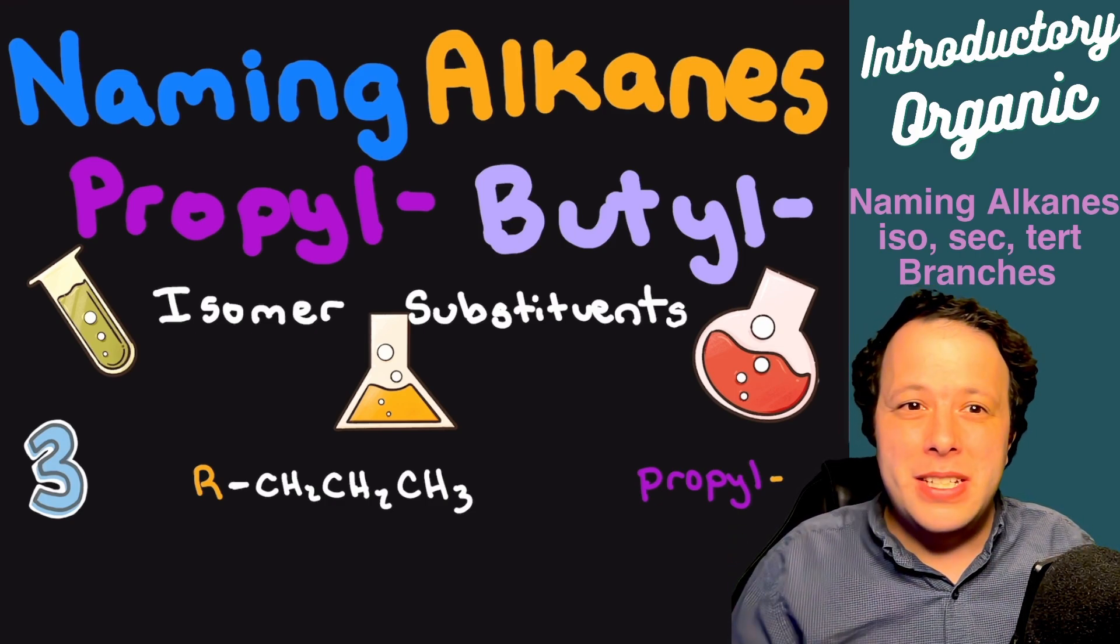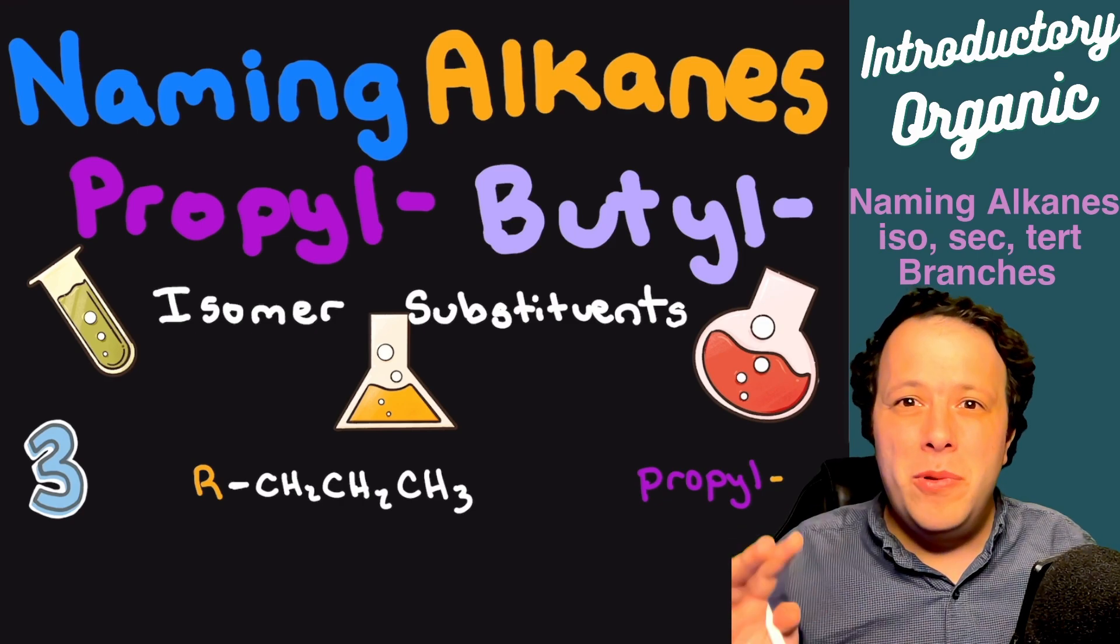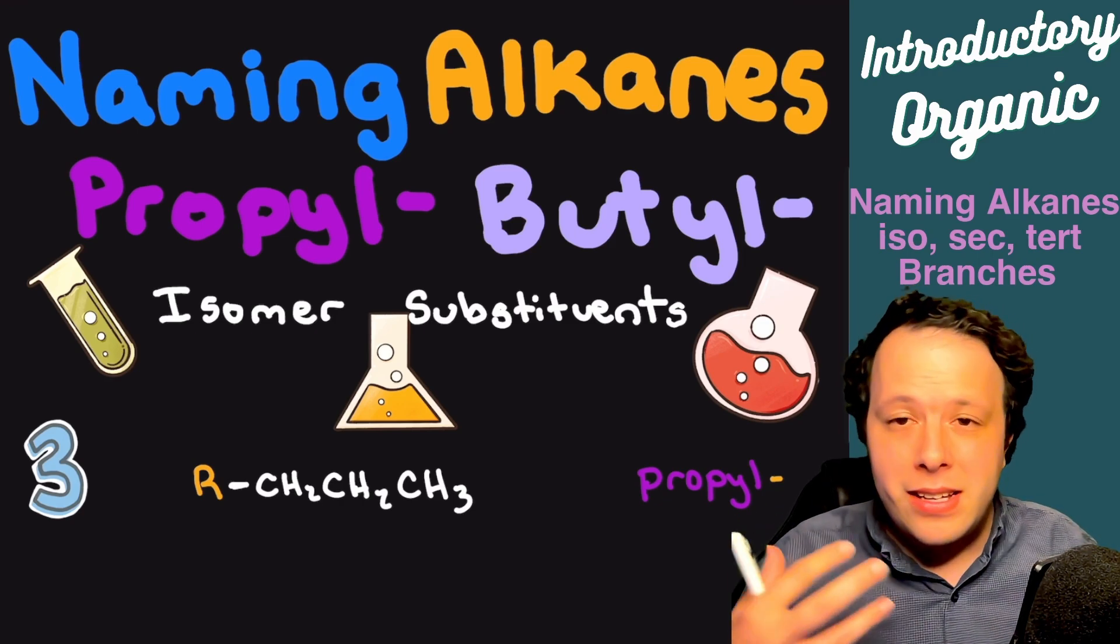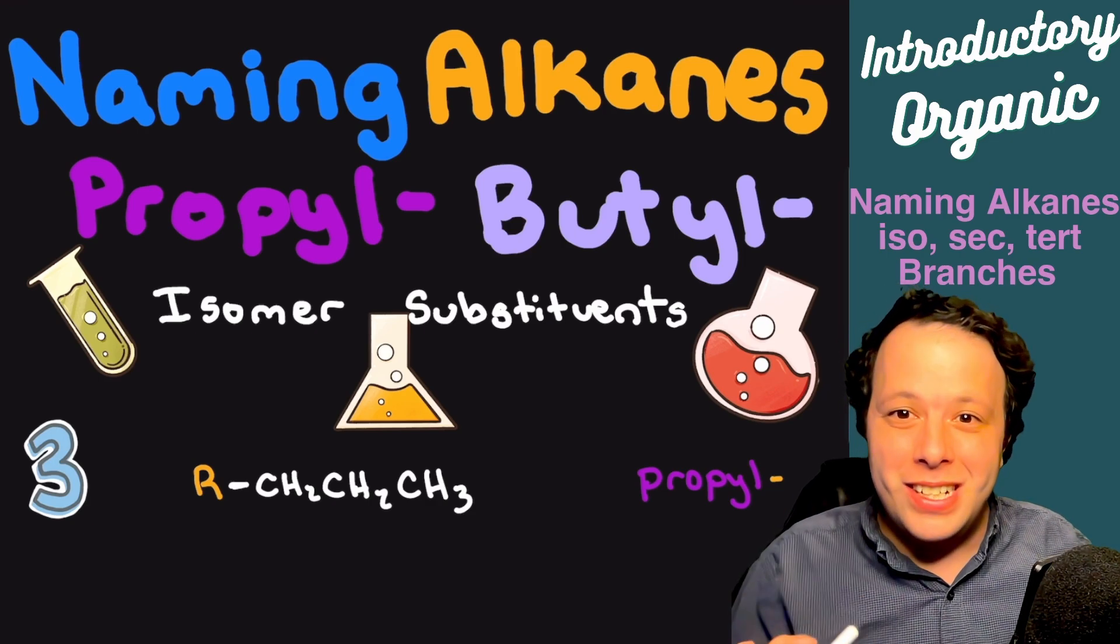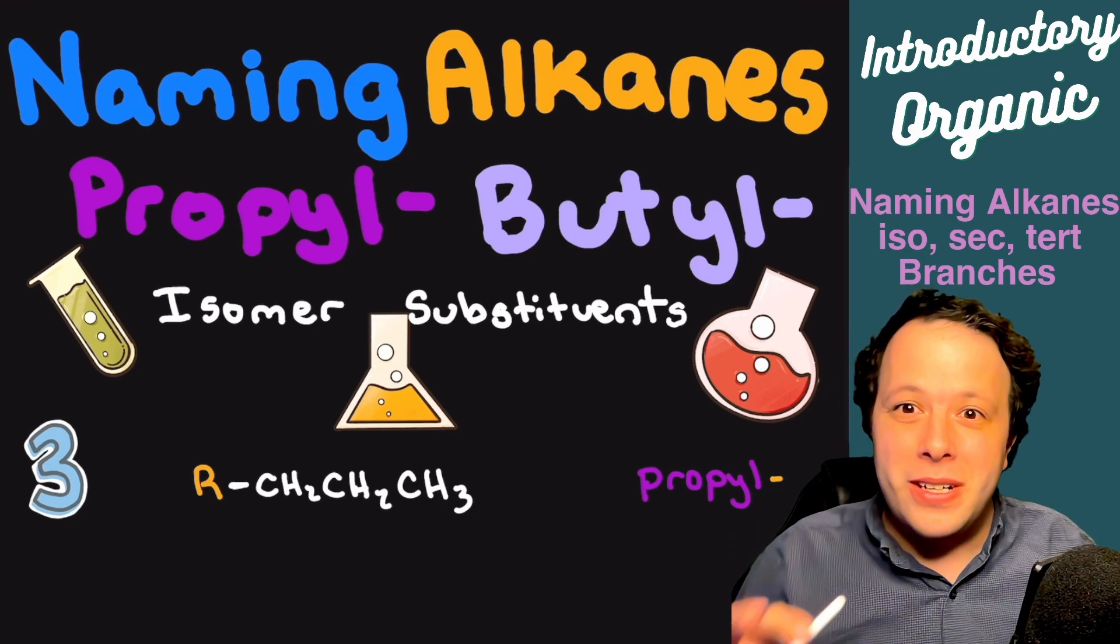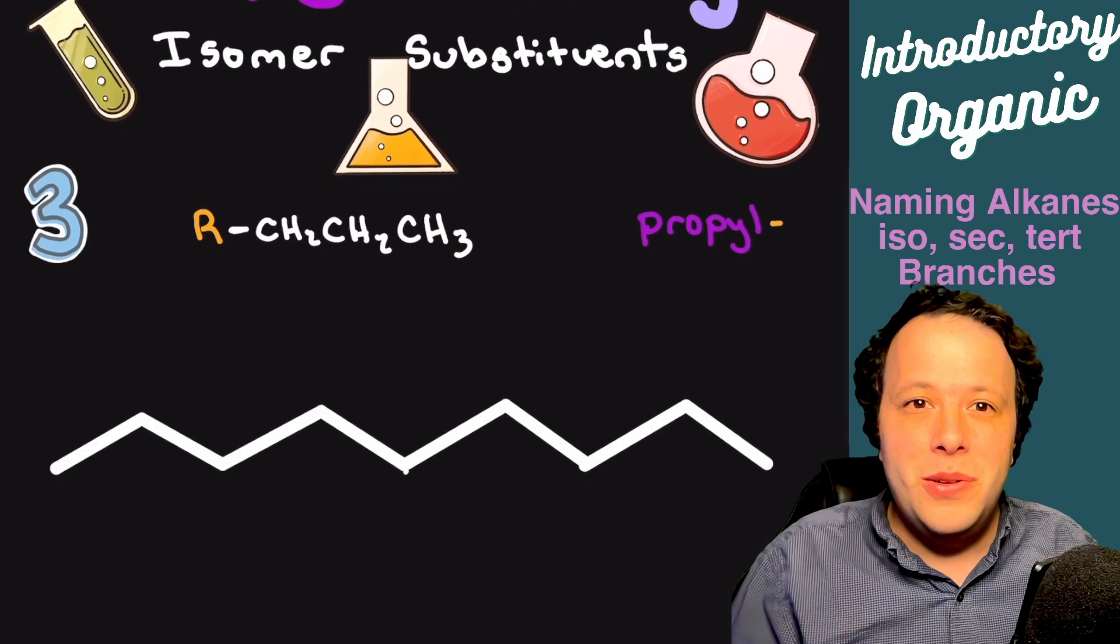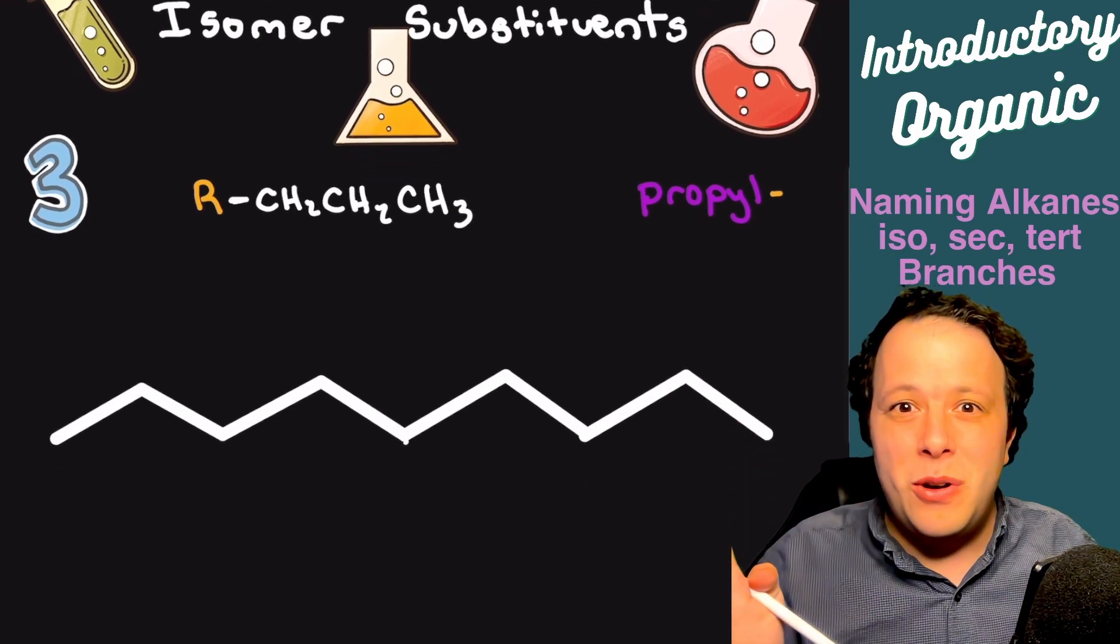One of the big things about these different groups is that with propyl and butyl, they start adding a lot more carbons, meaning that eventually they're not always going to be in a straight chain anymore. We're going to start seeing some different shapes arise.